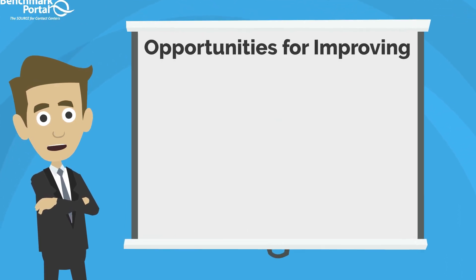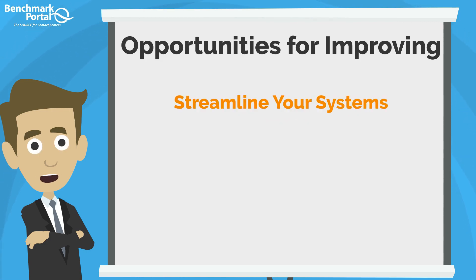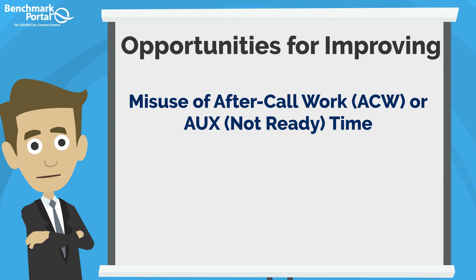Opportunities for improving ASA and queue time include ensuring your agents have responsive and seamless CRM and knowledge management tools that reduce handle time, making agents available to answer more incoming calls. Streamlining your current systems to improve agent speed in keying and screen navigation — even an improvement of 10 to 15 seconds per call can have a big impact on resources needed over the course of a year. Also address possible misuse of after-call work or AUX time, also referred to as not-ready time by agents. Supervisors and workforce management teams should pay attention to these metrics to create more agent availability.